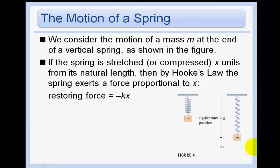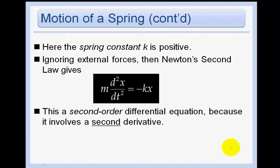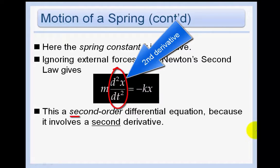The motion of a spring: we also consider the motion of a mass m at the end of a vertical spring. If the spring is stretched or compressed x units from its natural length, then by Hooke's Law the spring exerts a restoring force of negative kx, proportional to x. Ignoring external forces, Newton's Second Law gives us m times the second derivative equals negative kx.